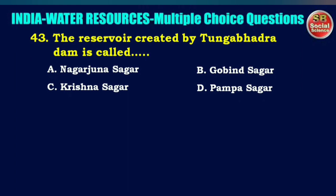The reservoir created by Tungabhadra Dam is called — options are Nagarjuna Sagar, Gomit Sagar, Krishna Sagar, or Pampa Sagar. The right answer is option D: Pampa Sagar.